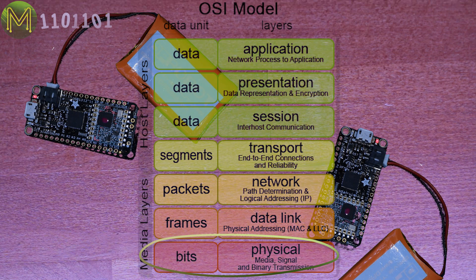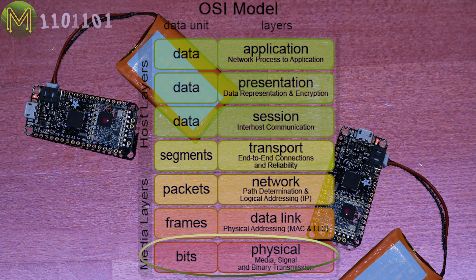So what is LoRa? LoRa is a physical wireless communication sitting at the bottom of the OSI model that allows long distance communication with low power requirements.